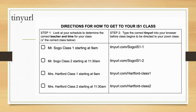Look at your schedule and determine the correct teacher and time for your class. If you have Mr. Sogo for class one, starting at 9 a.m., this is the tiny URL address you will use. Mr. Sogo class two, starting at 11:30 a.m., this is the address.